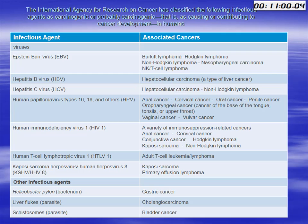The International Agency for Research on Cancer has classified the following infectious agents as carcinogens, or probable carcinogens, as causing or contributing to cancer development in humans: Epstein-Barr virus as an identified cause of Burkitt's lymphoma, Hodgkin's lymphoma, non-Hodgkin's lymphoma, and nasopharyngeal carcinoma; hepatitis B as a cause of hepatocellular carcinoma; hepatitis C as a cause of hepatocellular carcinoma and non-Hodgkin's lymphoma; and human papillomavirus types 16 and 18 as a cause of anal cancer, cervical cancer, oral cancer, penile cancer, oropharyngeal cancer, vaginal cancer, and vulvar cancer.